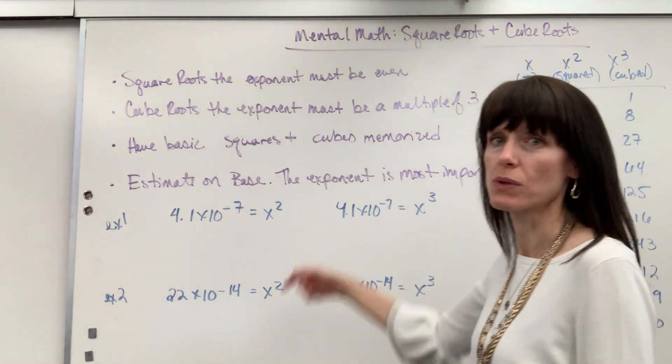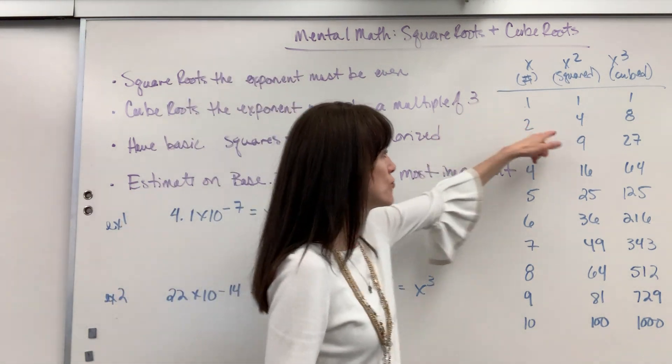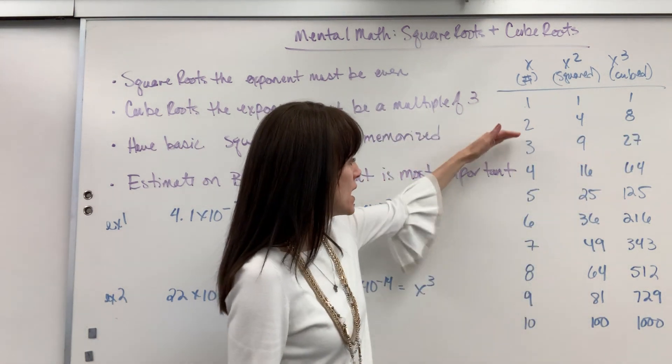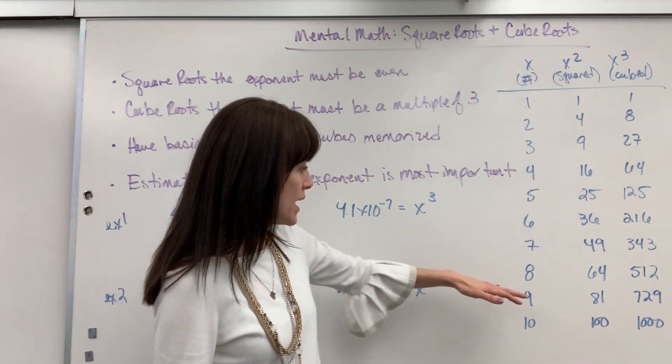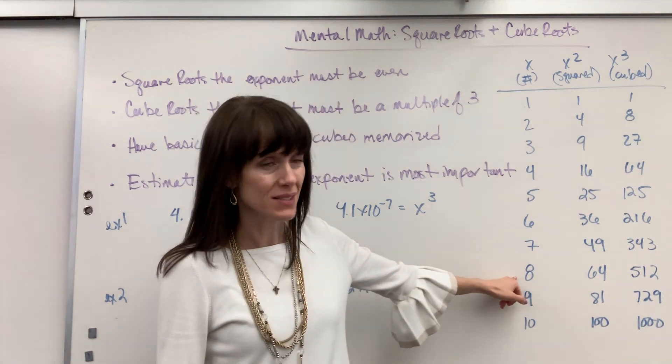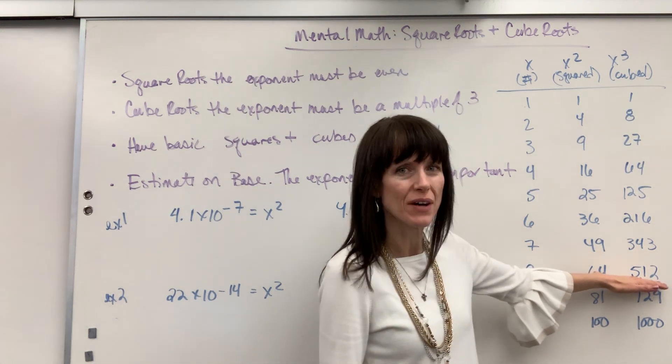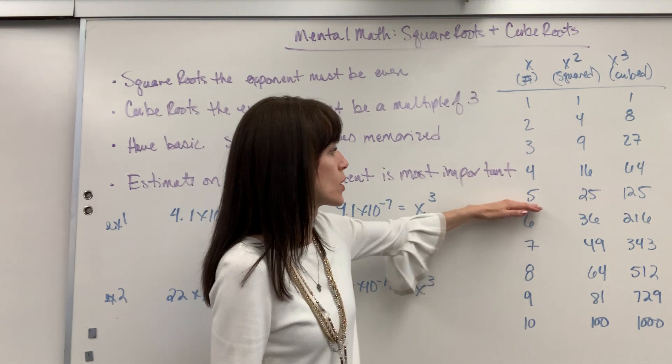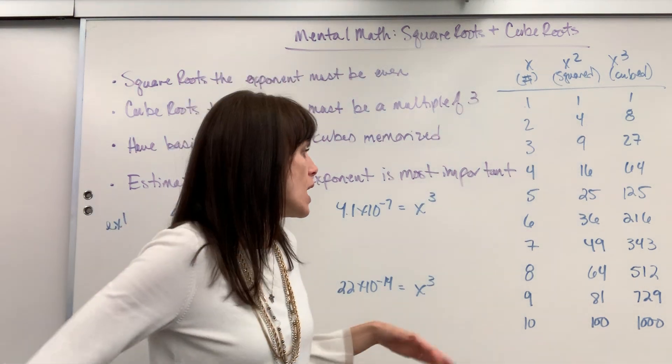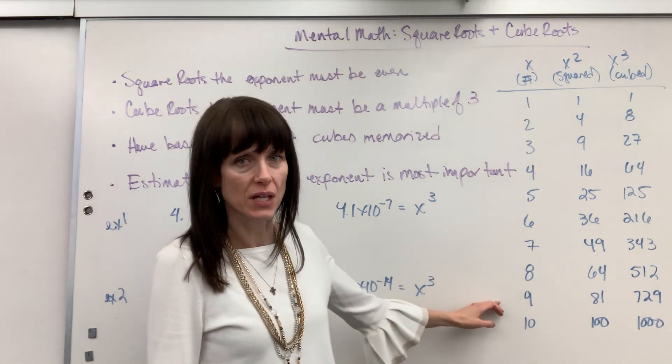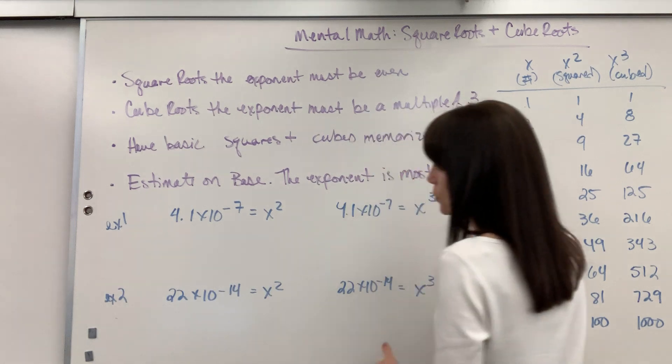Have your basic squares and cubes memorized because you're going to need those. So you guys know 1, 2, 4, 8 - square of 2 is 4, cube of 2 is 8. And I went all the way down to 10. I have seen as high as 8, and I've only seen that once on an AP test. Most of the time it doesn't go past 5, so if you have up through 5, good to go. Know your basic squares and cubes.